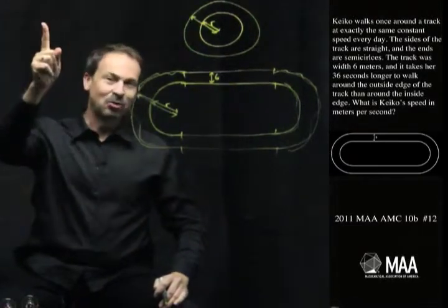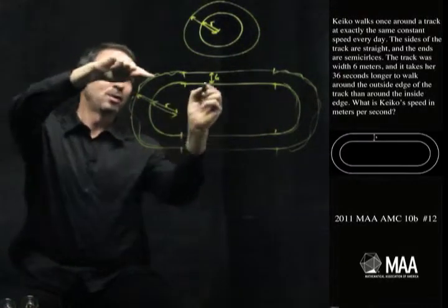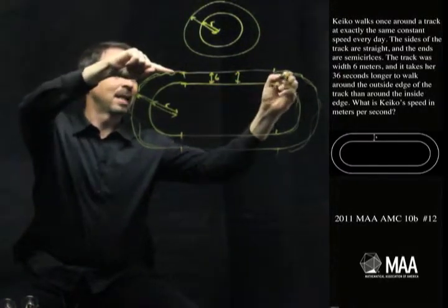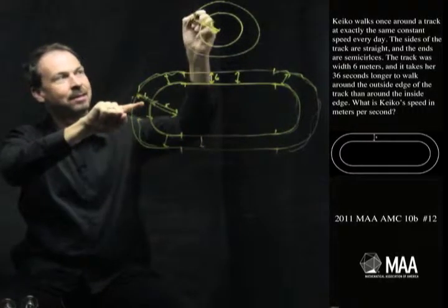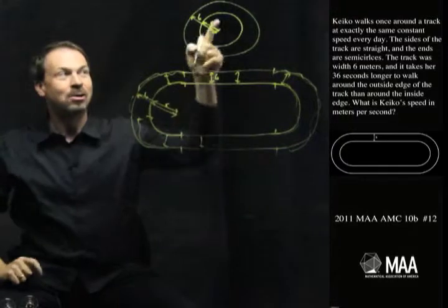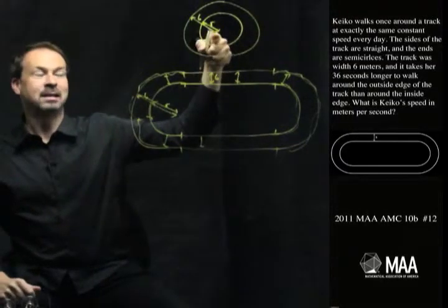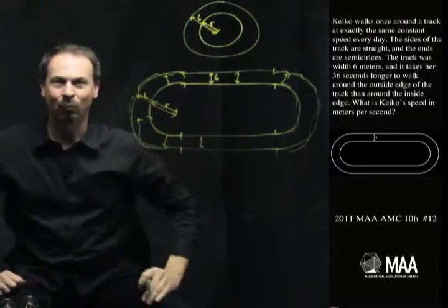But then I actually do know a form for the bigger radius. We're told the width of the track is six. Everything is six units apart. So this distance here in particular is six. So, the larger circle has radius r plus six. The smaller circle has radius r.